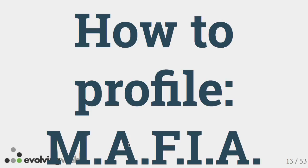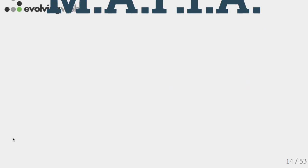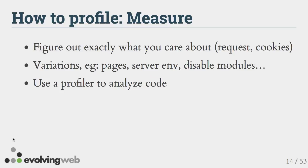I came up with a methodology for profiling — and every methodology needs a catchy acronym, so we got MAFIA. M is for Measure. You've got to figure out what exactly is slow and what exactly is fast, and what specific page you're trying to profile. When a client calls and says 'my website's slow,' that's not very helpful. We want to know: which page is slow? Are you logged in or not? Is the site slow in development with only one user, or in production with 10,000 people?